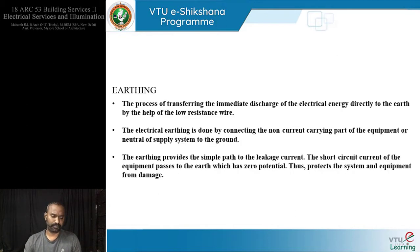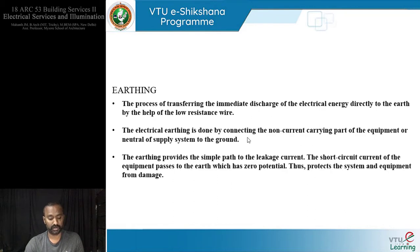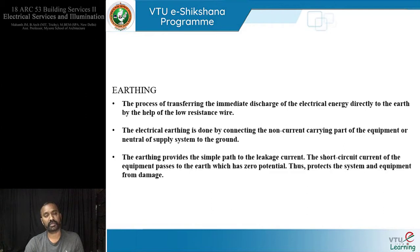So what is earthing? Most of us have a vague definition: it is the process of transferring an immediate discharge of electrical energy directly to the earth with the help of a wire of low resistance. Electrical earthing is done by connecting the non-current-carrying part of the equipment or the neutral of the supply system to ground. Earthing provides a simple path to leakage current, and short circuit current passes to earth, which has zero potential, thereby protecting the system and equipment from damage.